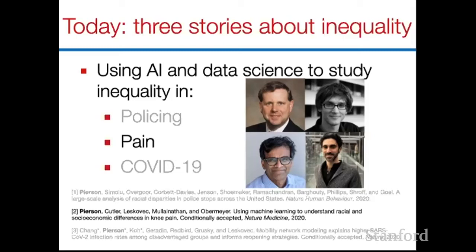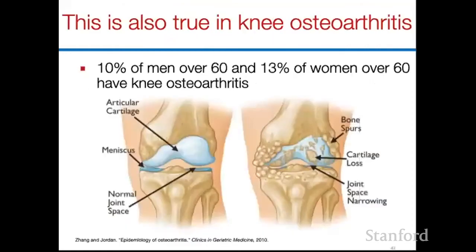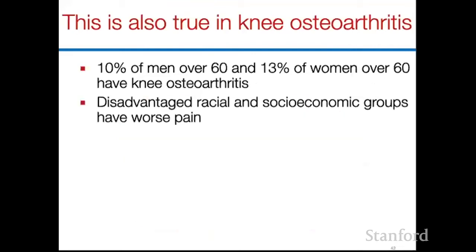Let's move to our second story: using AI to study inequality in pain. This is joint work with David, Urey, Sendel, and Seattle. Urey is also my academic advisor. A general fact about pain is that disadvantaged groups experience more of it — you see this for socioeconomic disadvantage across a variety of pain types, across multiple continents and multiple samples. It's quite a robust finding, and you see it for racially disadvantaged groups as well. This is also true in knee osteoarthritis, one of the most common causes of disabling pain in older adults, where the wear and tear of time causes the padding between knee bones to erode and the bones grind together.